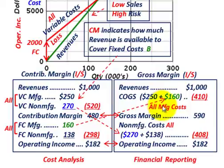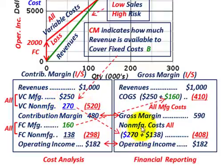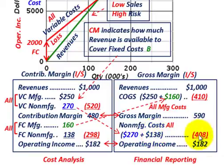Continuing to operating income from the gross margin: non-manufacturing costs include the $270 variable non-manufacturing costs plus fixed non-manufacturing costs of $138, totaling $408. Subtracting $408 from the gross margin of $590 gives an operating income of $182 — the same operating income we calculated using the contribution margin method.